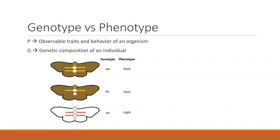I want you to understand the difference between genotype and phenotype because when we talk about biodiversity, we're talking about diversity in both. Genetic diversity is ultimately critical for maintaining the viability of a population over a long period of time. Phenotype diversity includes what organisms look like but also the diversity of their behavior — and that gets into our concept of functional diversity. What is the diversity of genes organisms carry, and what is the diversity of what they do and how they look?